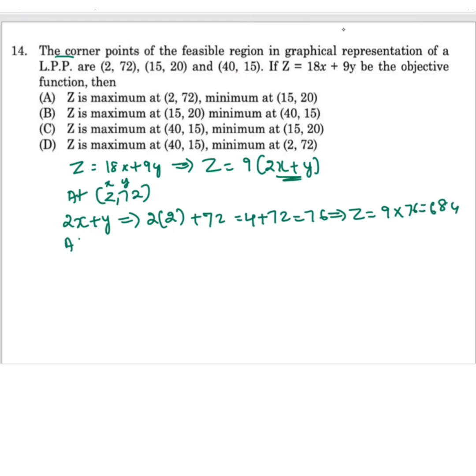Then you will take the second point at (15,20). So first one is x, second one is y. So here 2x + y will be 2 into 15 plus 20. 2 times 15 is 30.